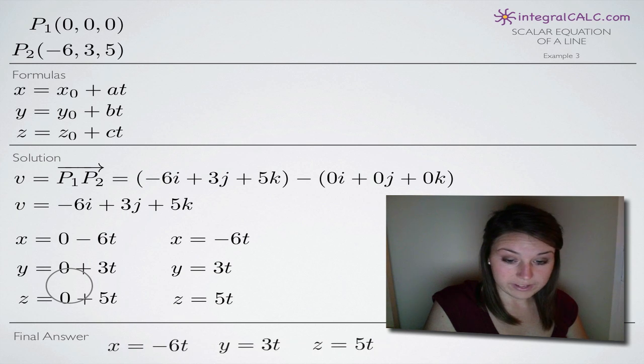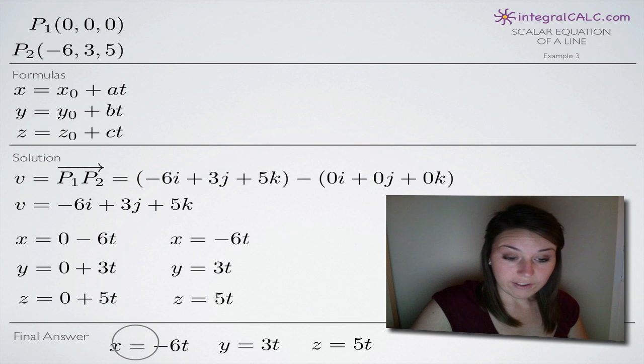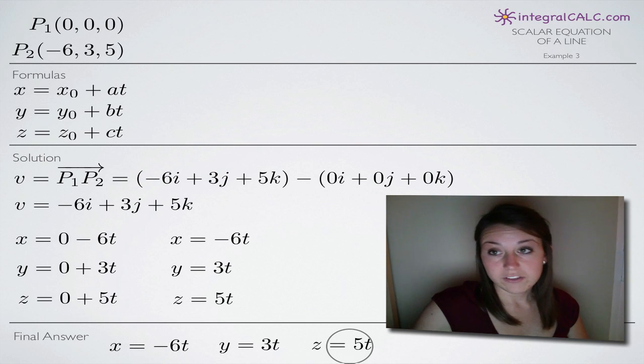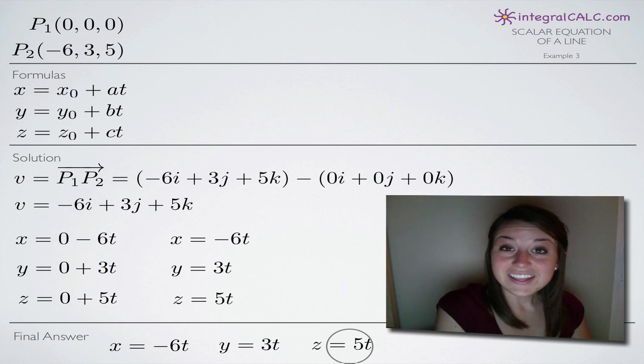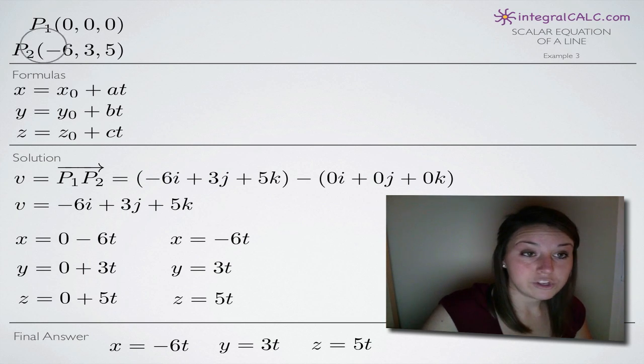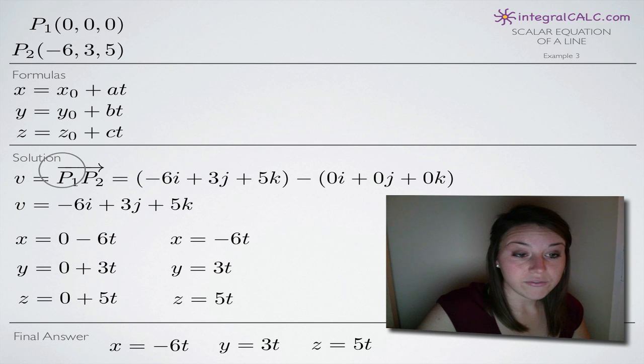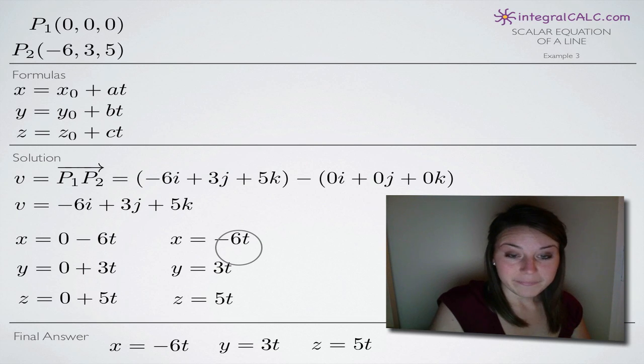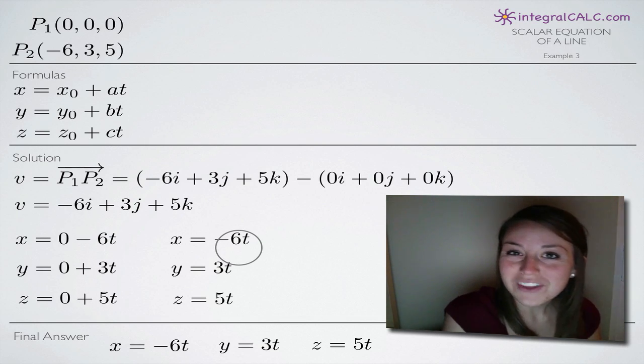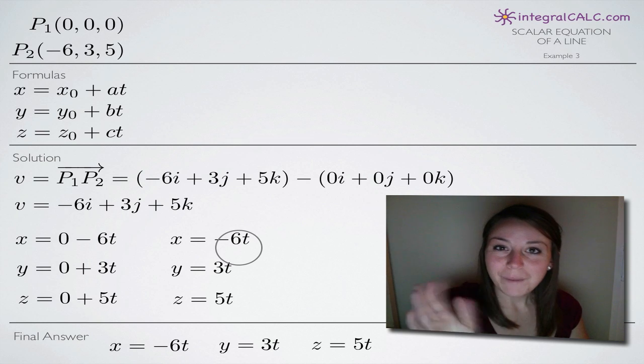And when we put those three together, we'll get our final answer. These three equations here, together, constitute our scalar equations of this line. So that's it. That's all we have to do when we're given two points. Remember, find the vector first. Then you have the vector along with P₁ to find your three equations using these formulas here. So I hope that helped you guys and I'll see you in the next video. Bye!